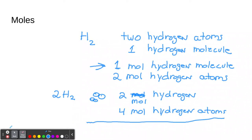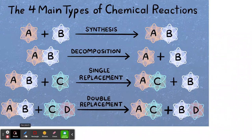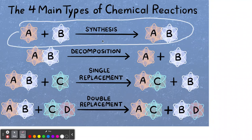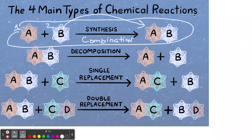Now let's talk about the types of reactions. These are four main types — there are others we'll cover in other videos. We'll start with synthesis, also called combination. Here you can see it has two reactants — two separate reactants — and these two reactants will make one product.